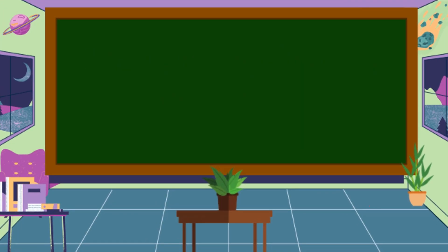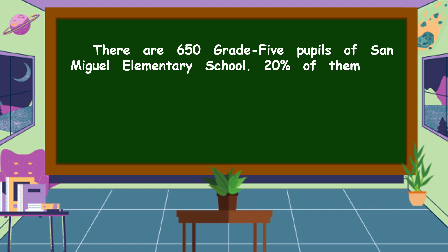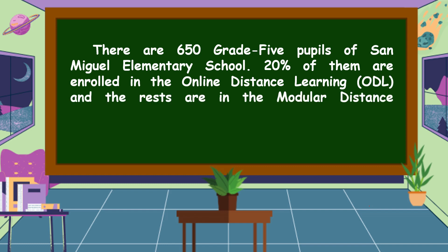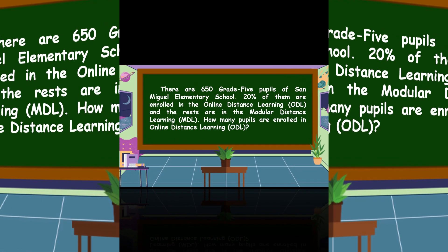Let's read the problem. There are 650 grade 5 pupils of San Miguel Elementary School. 20% of them are enrolled in the Online Distance Learning or ODL, and the rest are in the Modular Distance Learning or MDL. How many pupils are enrolled in Online Distance Learning or ODL?